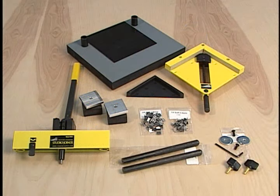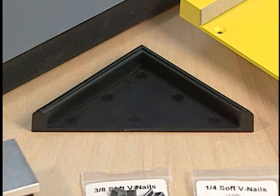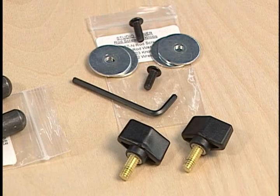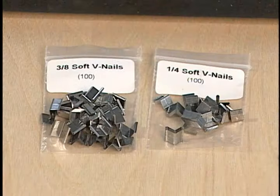The contents of the studio joiner are the baseboard, molding vise, lever assembly, molding spacer, support rods, wrenches, screws and knobs, levelers, and extra nails.